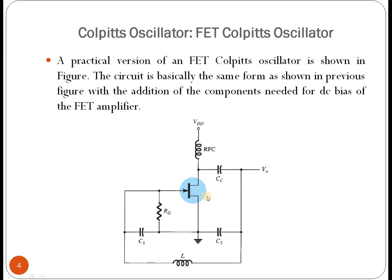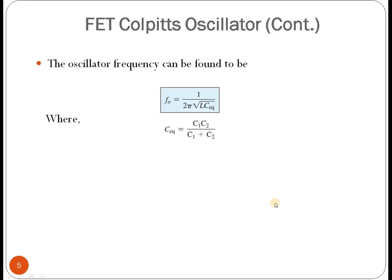For the FET Colpitts oscillator, the oscillation frequency is found from the equation: F₀ = 1 / (2π√(L·C_eq)), where C_eq is the equivalent capacitance given by C_eq = (C1·C2) / (C1 + C2). So we need to know the inductor value and the equivalent capacitor value to find the oscillator frequency, which is the most important parameter — it tells us at which frequency the signal is generated.